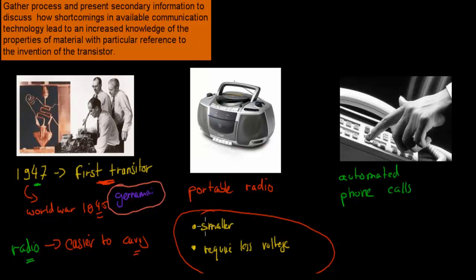These two things allowed us to make devices which were different. For example, we had portable radios. Beforehand we had massive radios which were really not very easy to transport. Now we had portable radios which meant that we had better communication technologies.